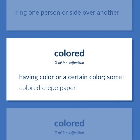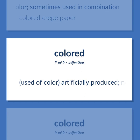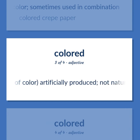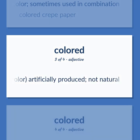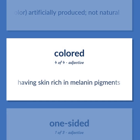Colored — having color or a certain color, sometimes used in combination. Example: Colored crepe paper. Used of color: artificially produced, not natural. Also: having skin rich in melanin pigments.